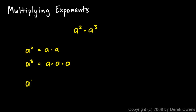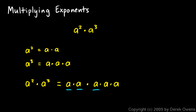That means a squared times a cubed has to be a times a times a times a times a — a multiplied by itself 5 times. So that has to be a to the fifth, or a to the power of 5. Take note: the 2 and the 3 add up to 5, and that is not a coincidence.